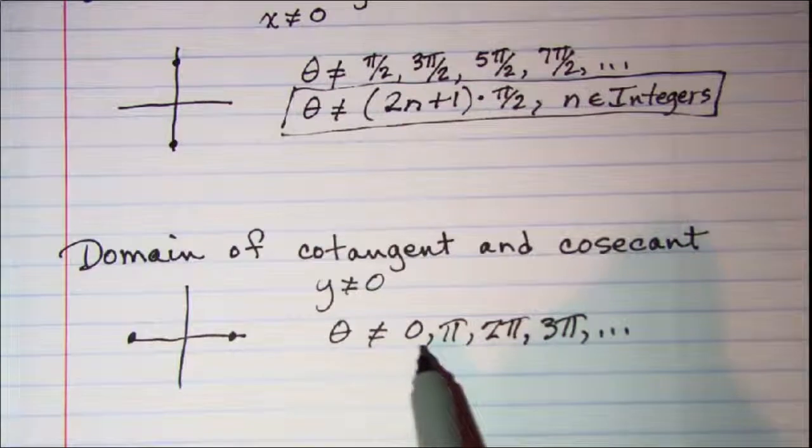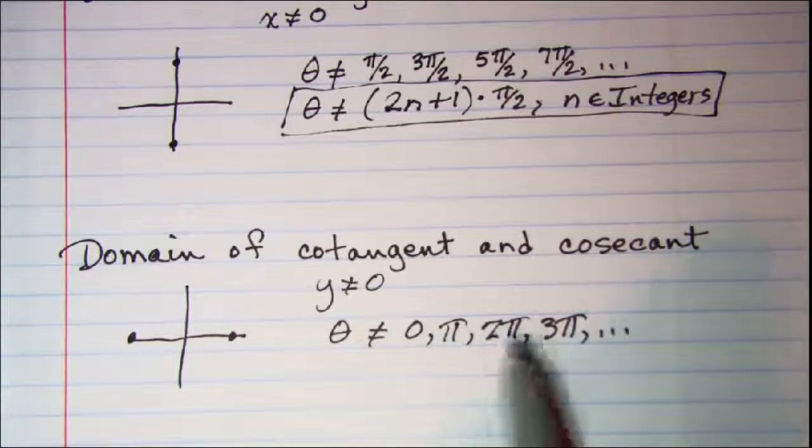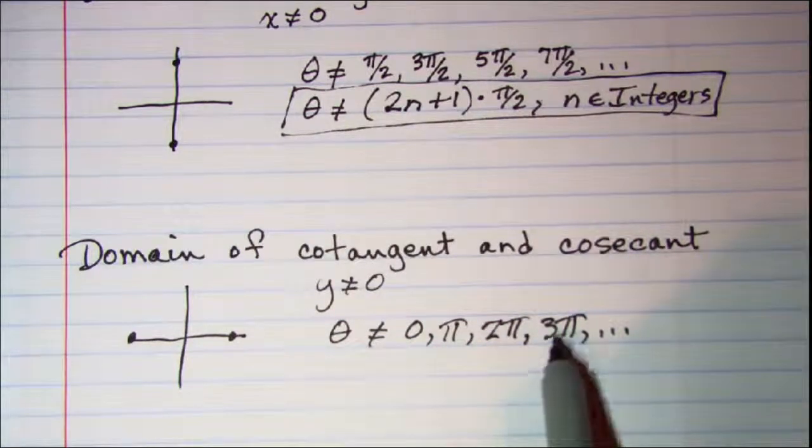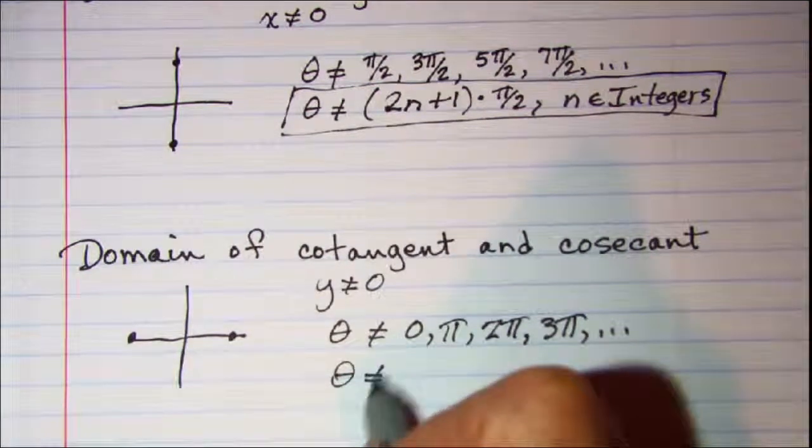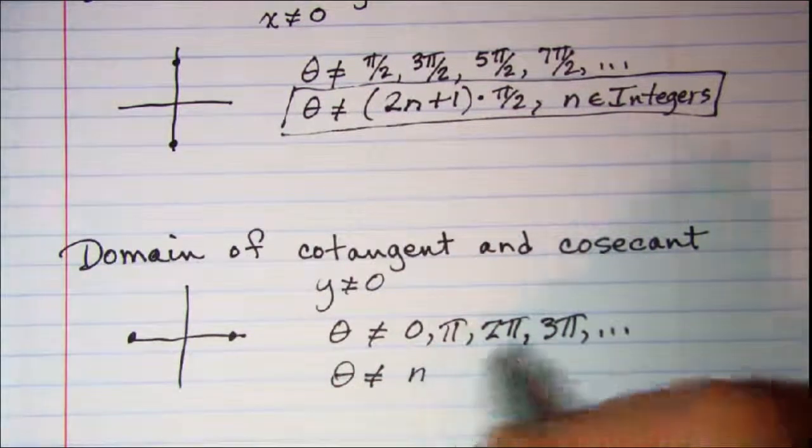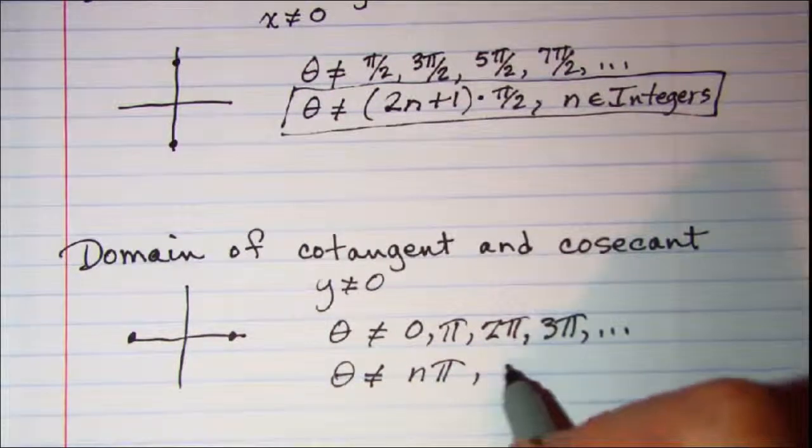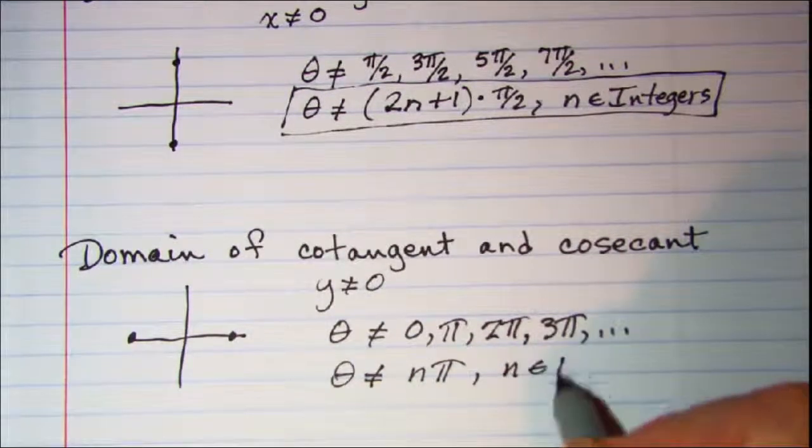On this one we have 0, 1, 2, 3—those are just consecutive integers. So theta cannot equal n times pi, where n is an element of the integers.